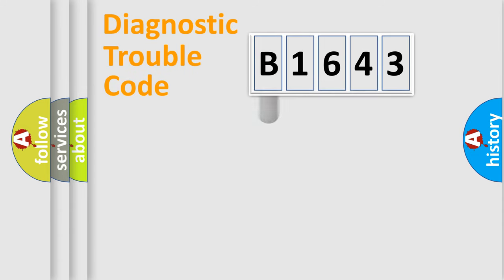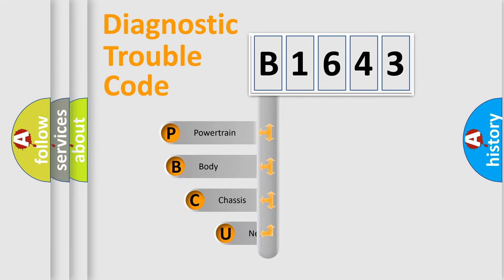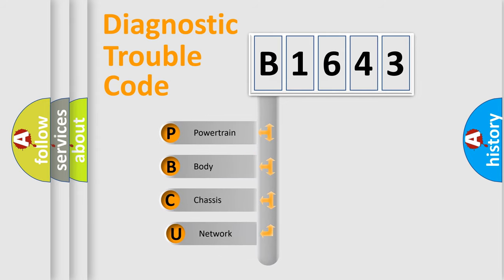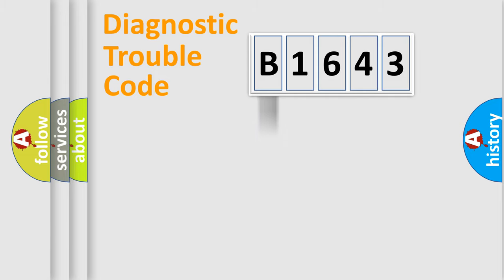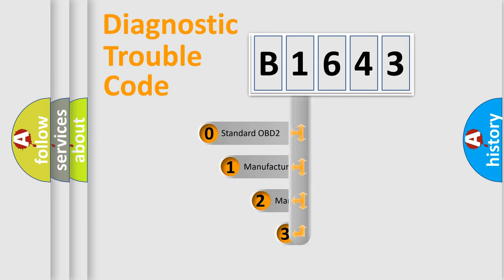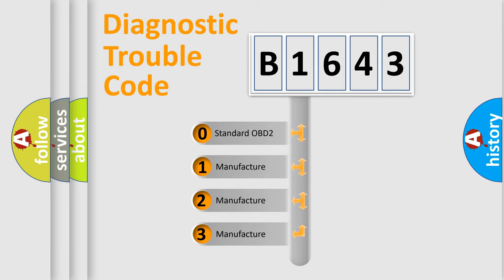Let's do this. First, let's look at the history of diagnostic fault code composition according to the OBD2 protocol, which is unified for all automakers since 2000. We divide the electric system of an automobile into four basic units: Powertrain, Body, Chassis, and Network. This distribution is defined in the first character of the code.